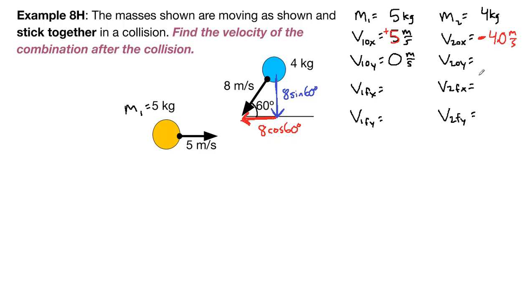And the y component, 8 sine 60 degrees, is 6.93 meters per second, and it's pointing downwards, which is our kind of standard default negative direction.